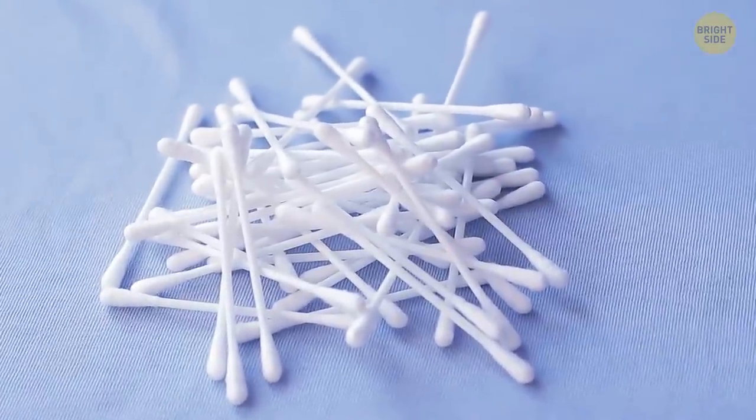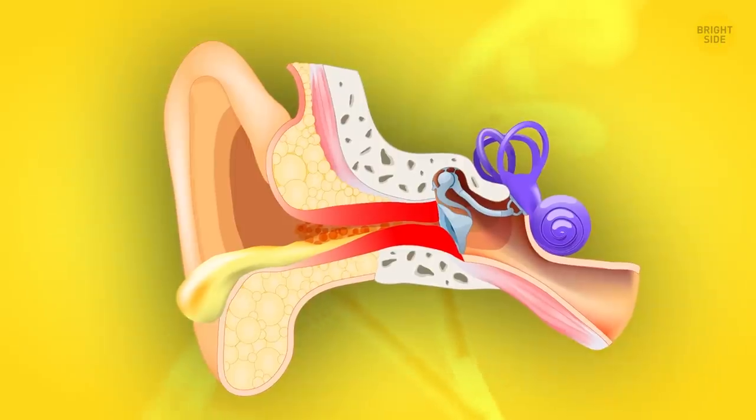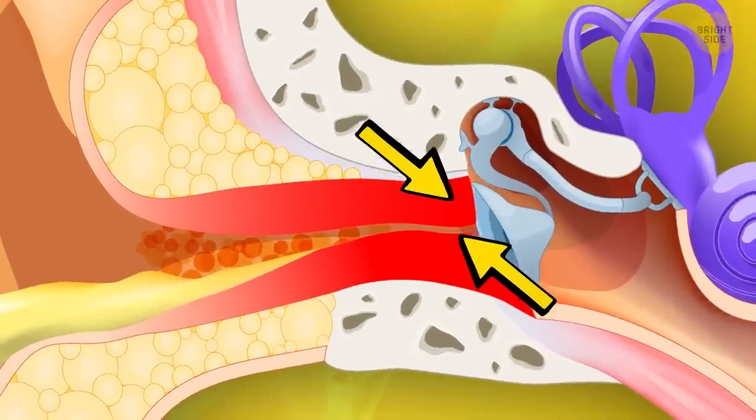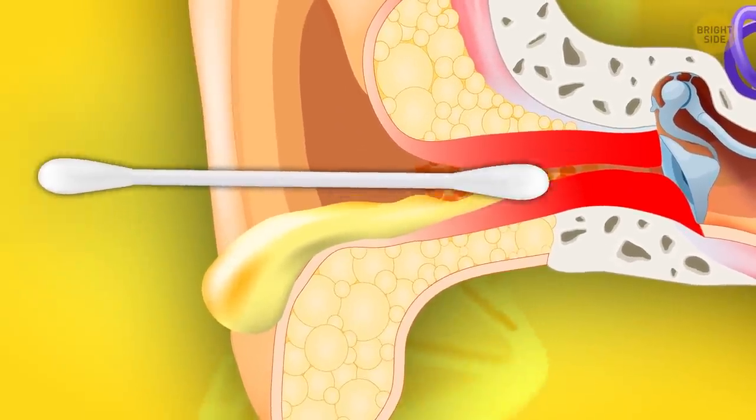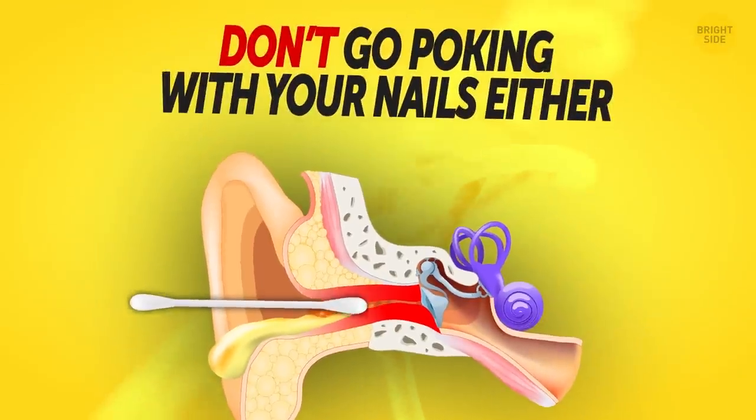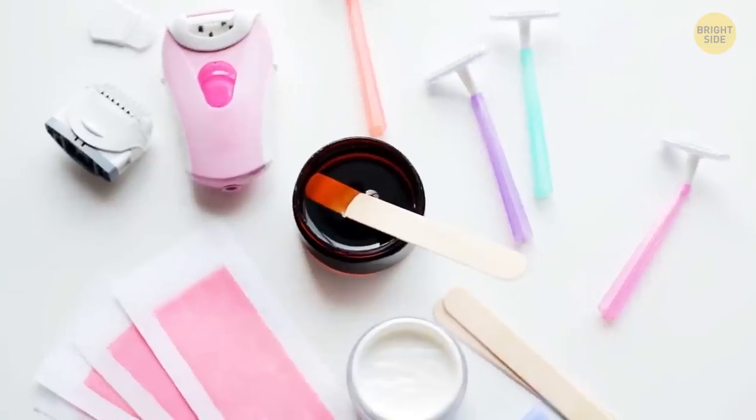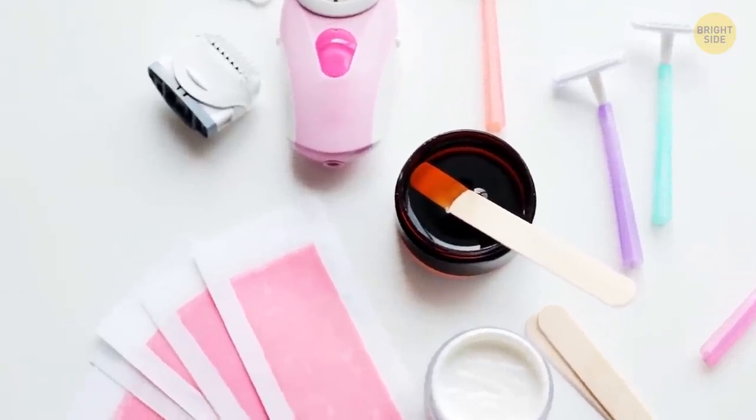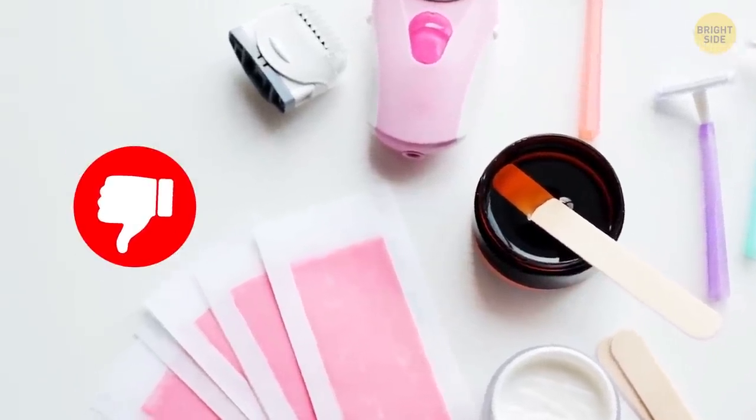Since you've already used up all your cotton swabs on your belly button, you won't be tempted to clean your ears with them. And good for you! The inner part of your ear is pretty sensitive, and you can easily damage it with a cotton tip. So don't go poking in there with your nails either! Chances are you'll push the wax even further too, so it's a lose-lose.